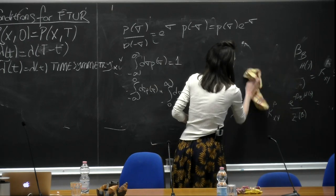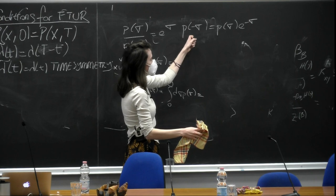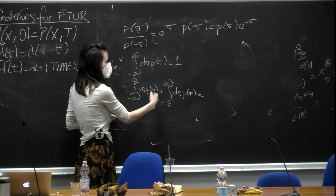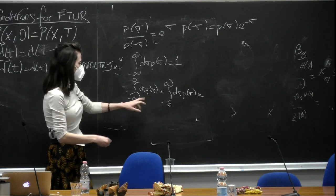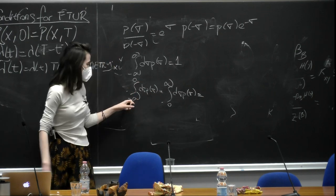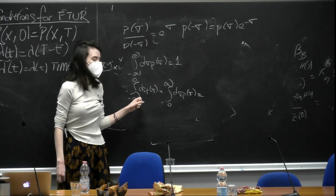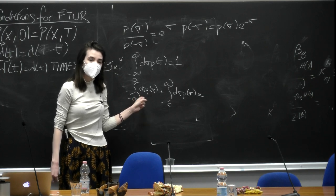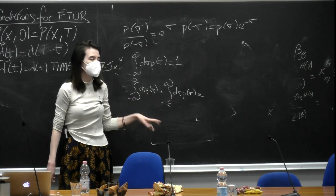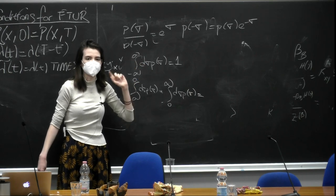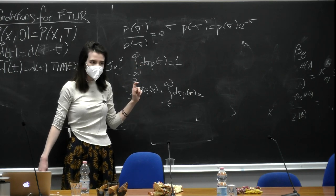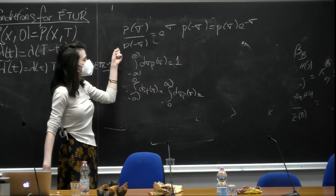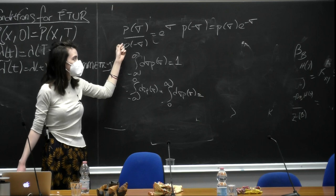What we can do is use this expression and put it here, because taking the integral from minus infinity to 0 — where the entropy production random variable takes negative values — is actually describing the behavior of P of minus sigma. And how we can write P(-σ) is by the strong fluctuation theorem.